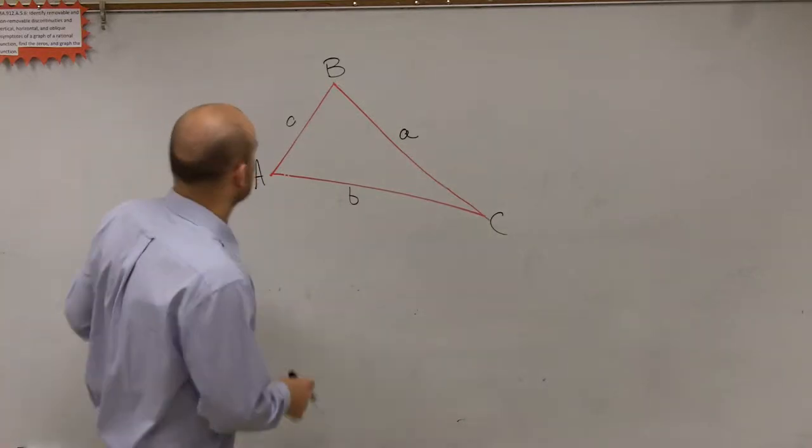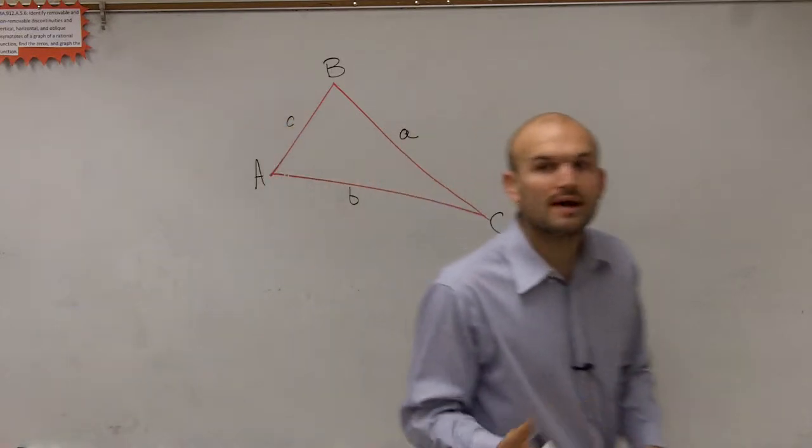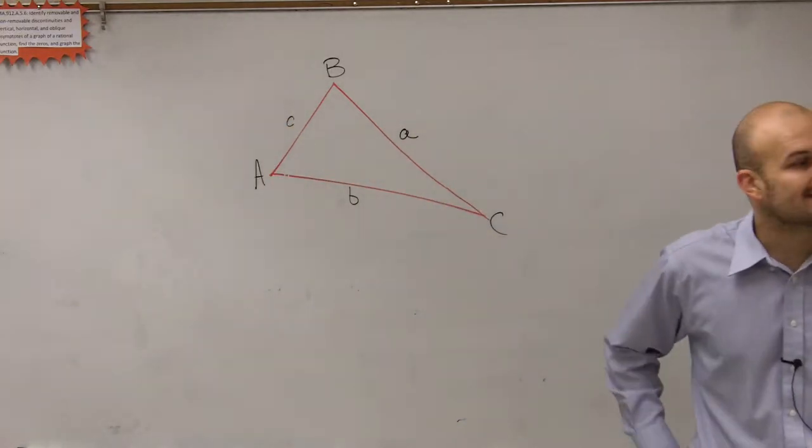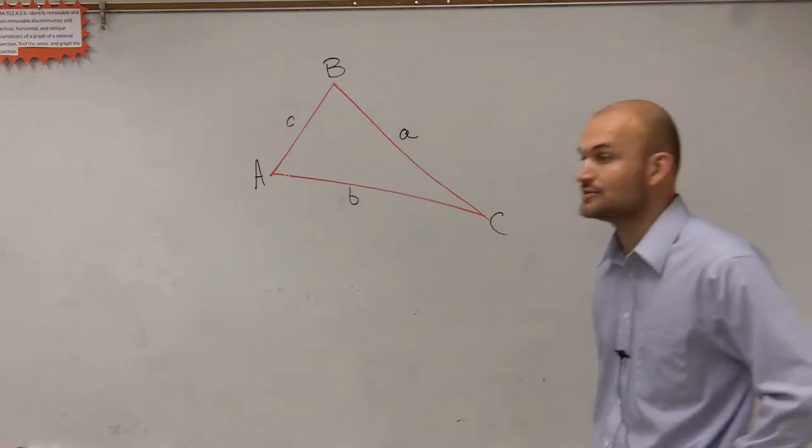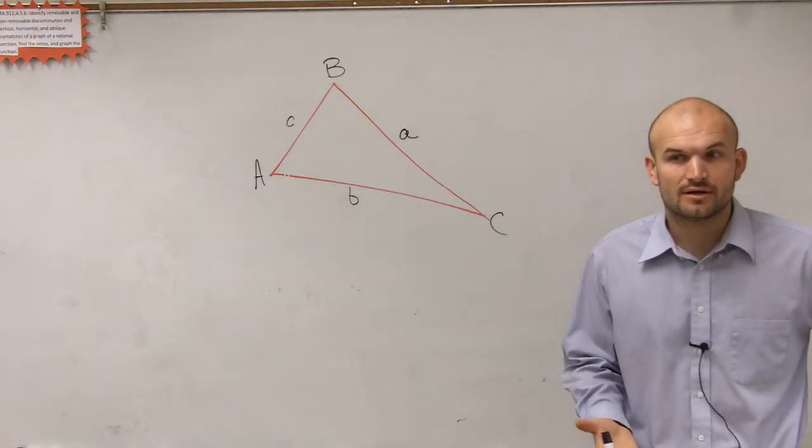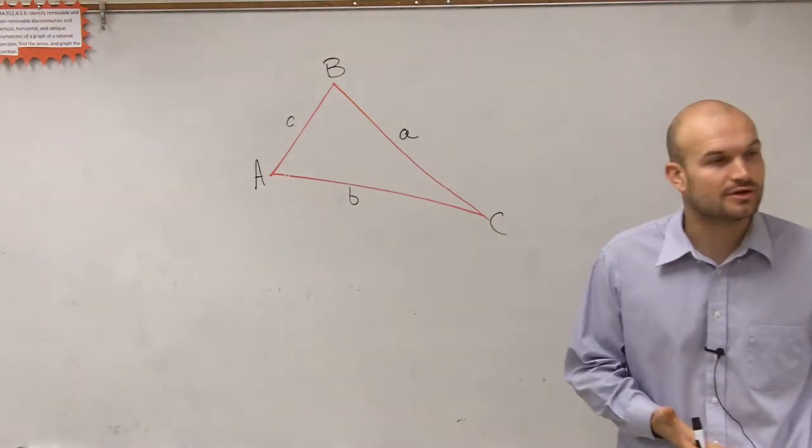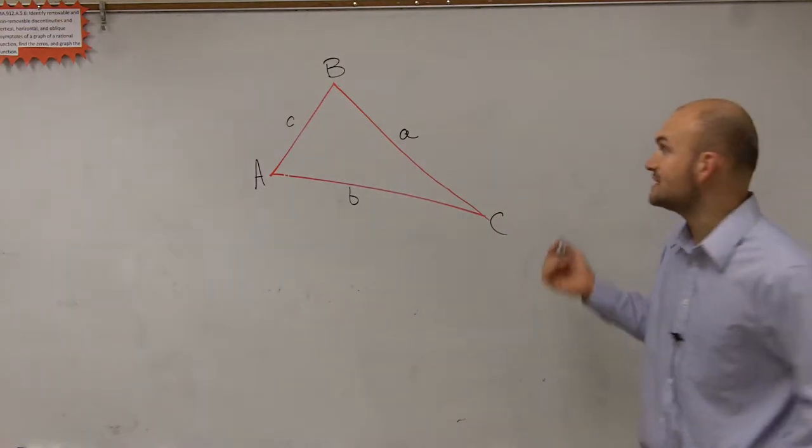So when given a nice little triangle like this, what is one way that we can identify what the missing side lengths and angles are going to be? Well, depending on what information we're given, we can use certain formulas and laws. One of the first one is what we call the Law of Sines.